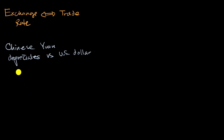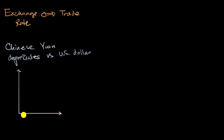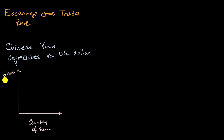To visualize what we're talking about, let's draw the supply and demand, or the exchange market, for the Chinese Yuan. Our horizontal axis would be quantity of Yuan, and our vertical axis would be the price of Yuan in terms of dollars — so dollars per Yuan.